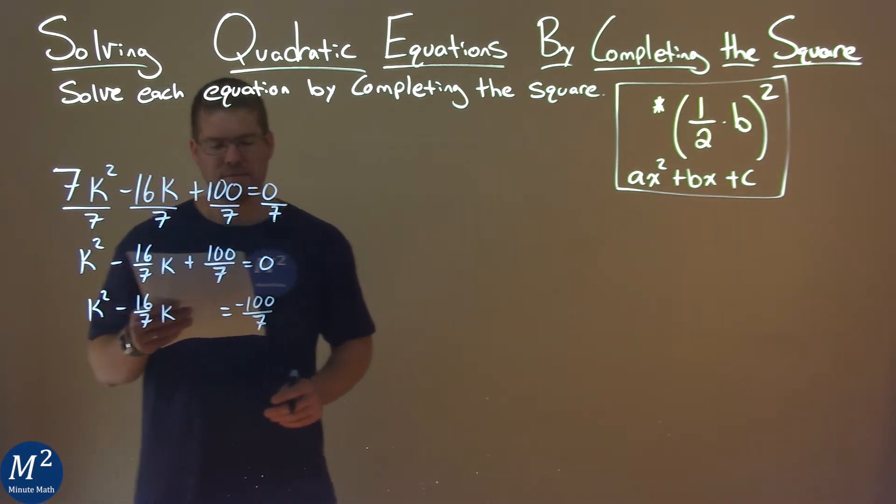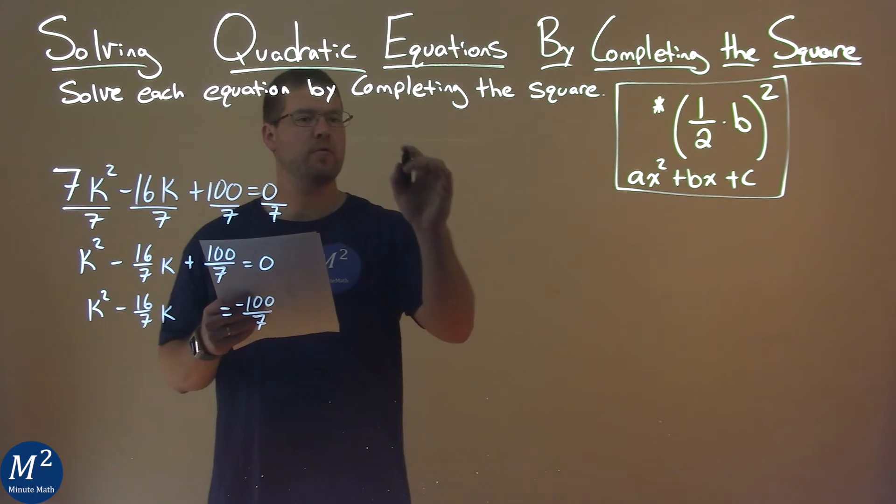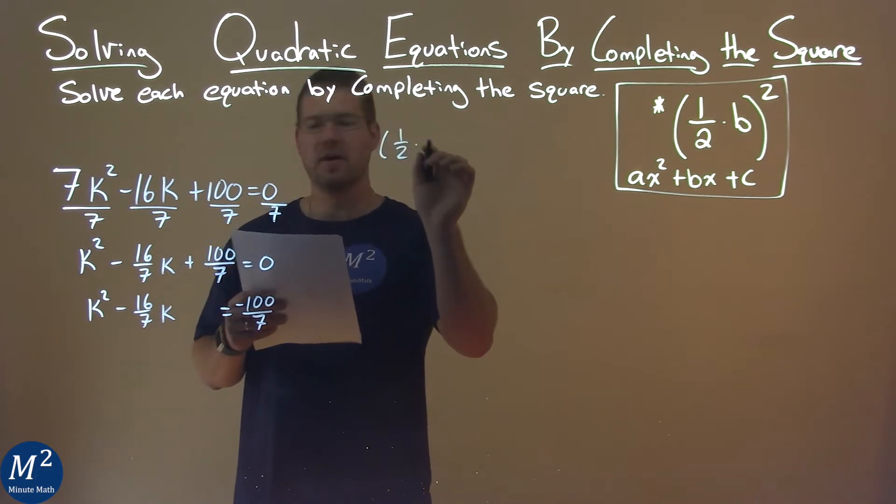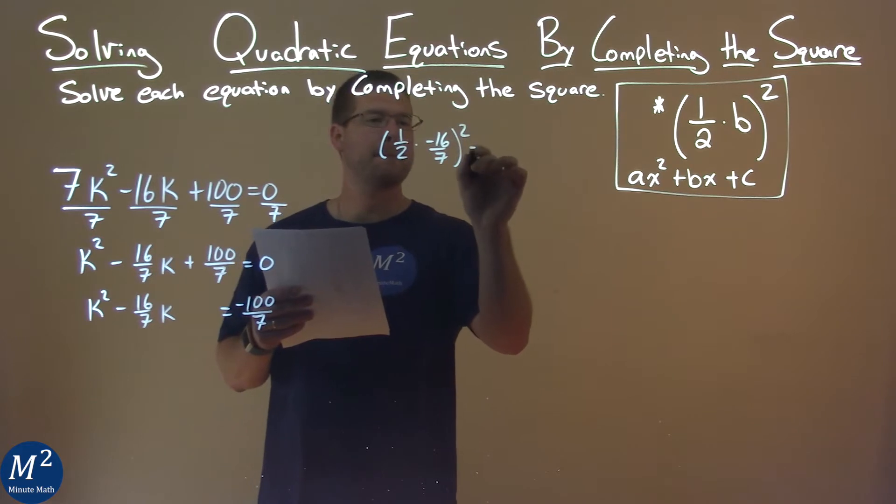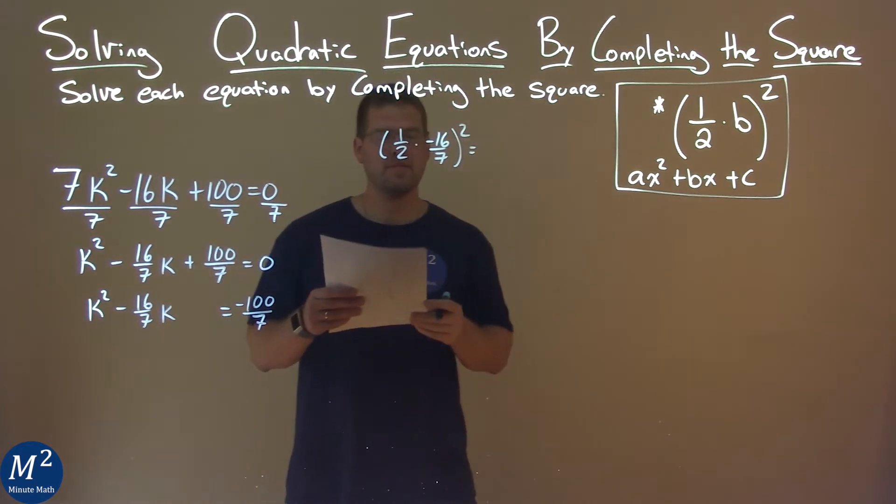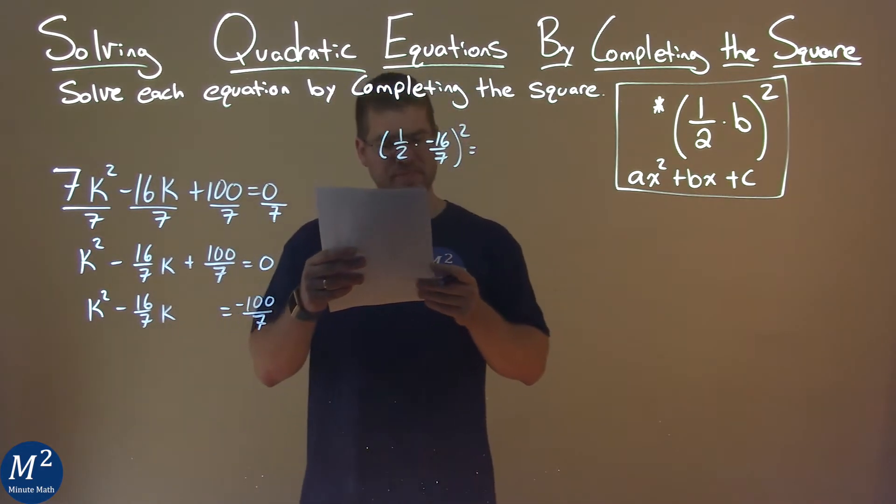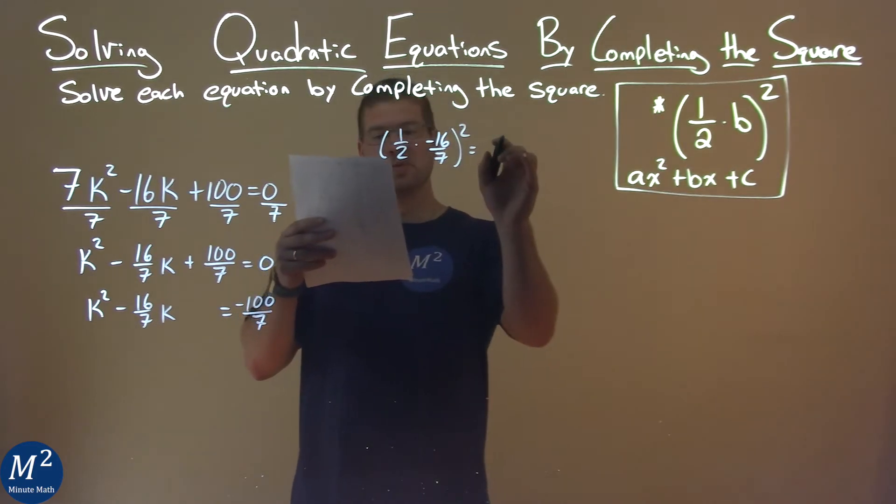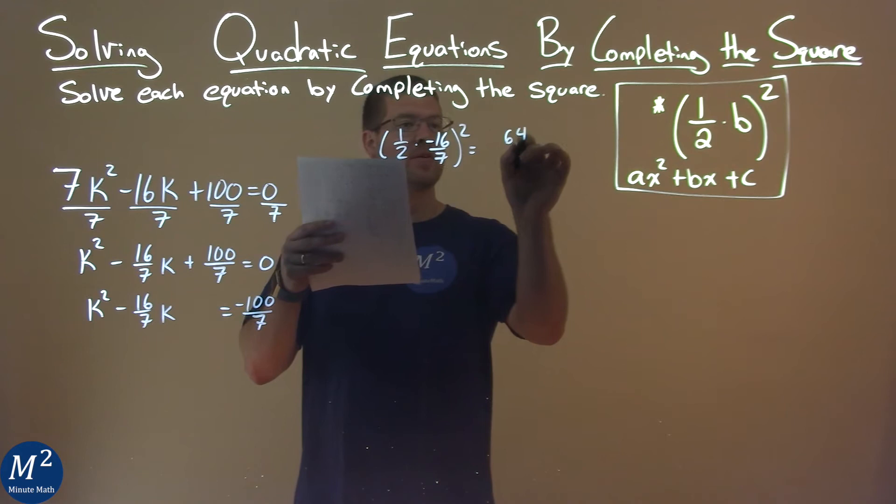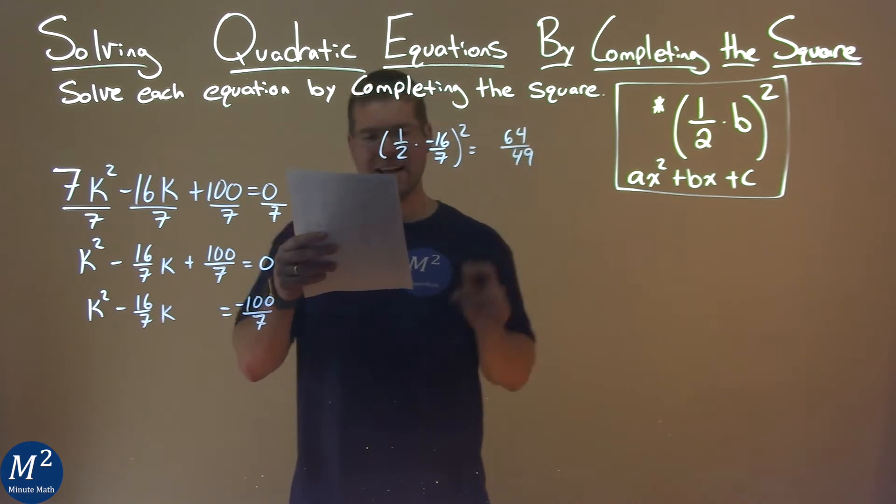Now, my b value is negative 16 over 7, so I'll use my formula: 1 half times negative 16 over 7 squared. Well, 1 half times negative 16 over 7 squared comes out to be 64 over 49.